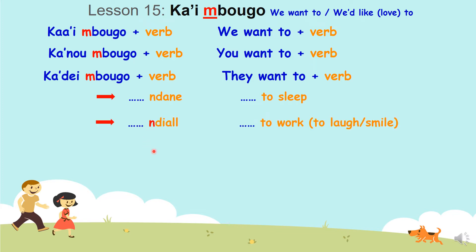I want to work: ka imbugo dan. Now we want to work: ka imbugo dan. You see, I have an N here in front of diyal. Singular is diyal, plural is njal. Ka imbugo dan, ka numbugo dan, ka dembugo dan — we want to work.